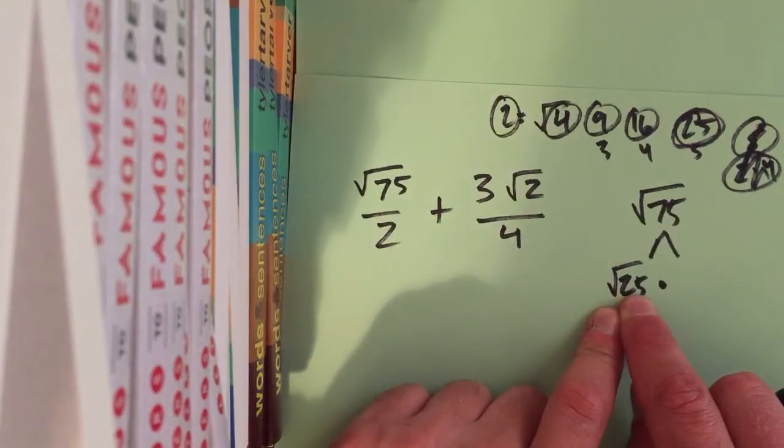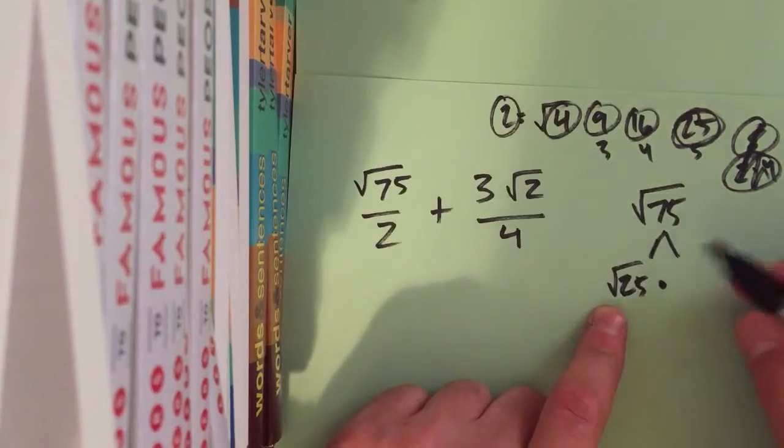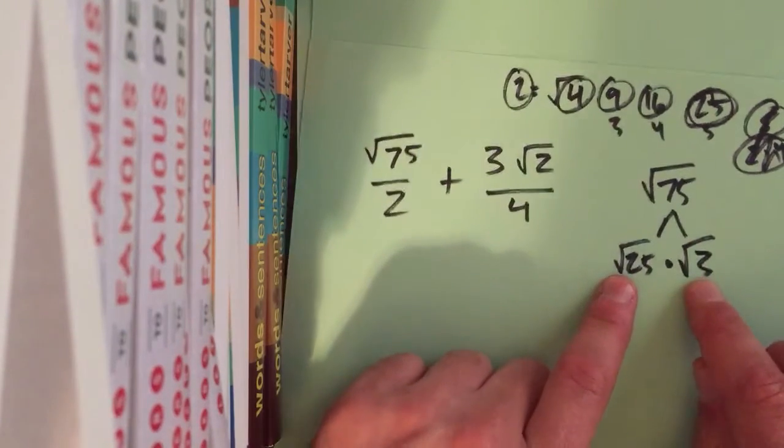So, I'll break that down, and it's 25. And then I know 25 times what is 75? 3. So, I've got radical 3.